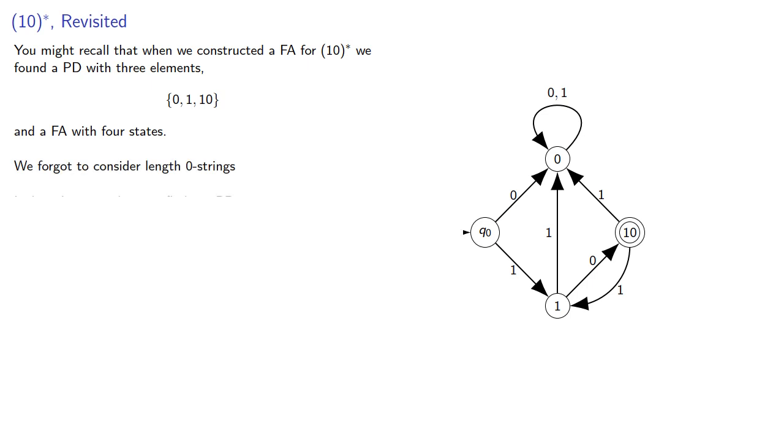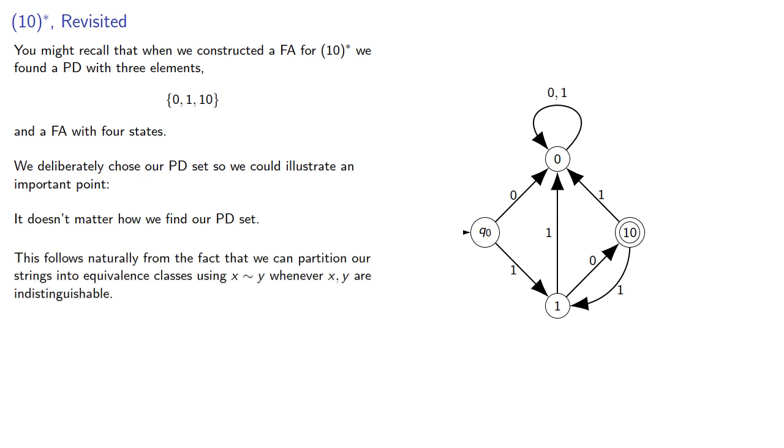And we deliberately chose our pairwise disjoint set so we could illustrate an important point. It doesn't actually matter how we find the pairwise disjoint set. And this follows naturally from the fact that we can partition our strings into equivalence classes using x~y whenever x and y are indistinguishable.